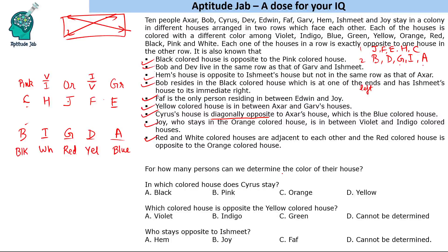The first question asks: for how many persons can we determine the colour of their house? We can determine it for all people except 2 — those in the violet and indigo houses. Which coloured house does Cyrus stay in? Cyrus stays in the pink house. Which coloured house is opposite the yellow coloured house? The opposite is either violet or indigo, so we cannot determine it. Who stays opposite to Ishmid? Opposite to Ishmid we have KV. That is the solution to this set.